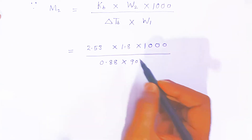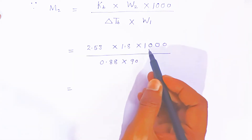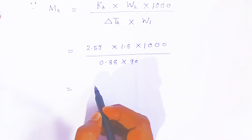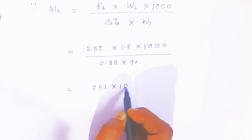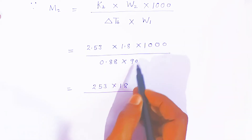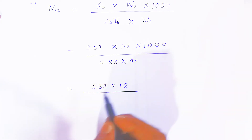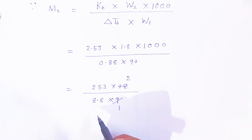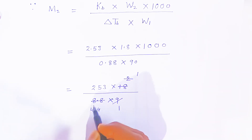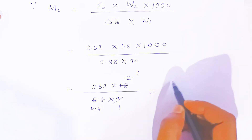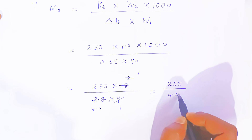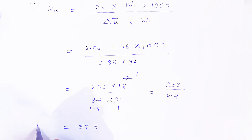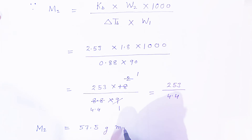Now substituting the values with 90 gram of solvent, we do the multiplication and division. Without the 1000, you can write 253 × 1.8 in the numerator. Simplifying: 10 × 9 in the denominator gives 8.8 × 9, and further dividing by 2 gives 253 divided by 4.4. Using a log table, the value comes out to 57.5 gram per mole. This is the molar mass of the solute.